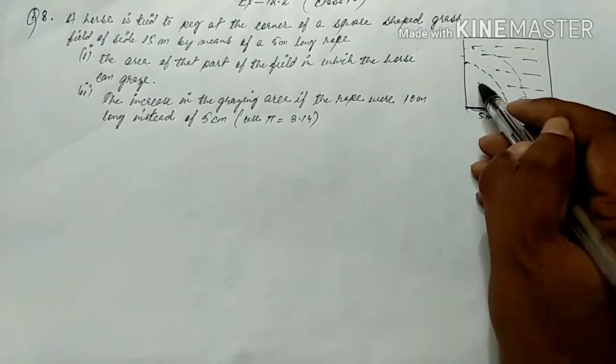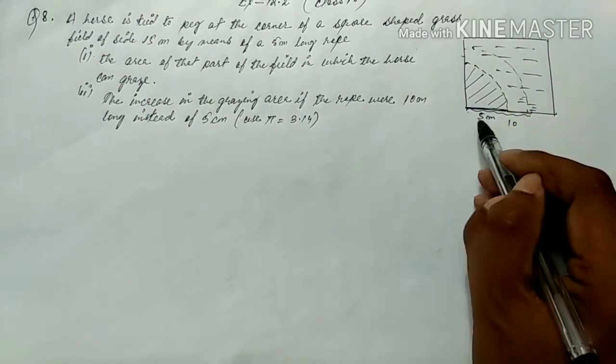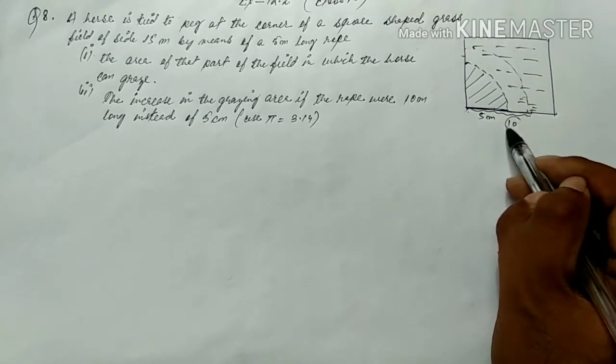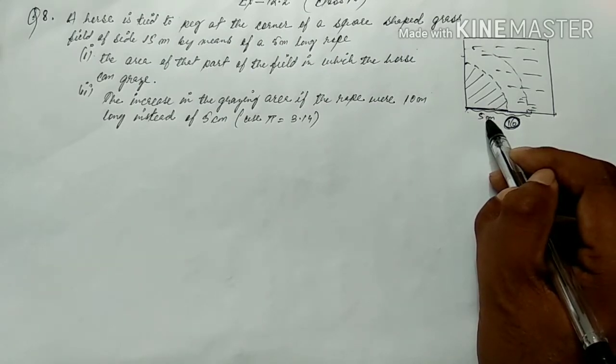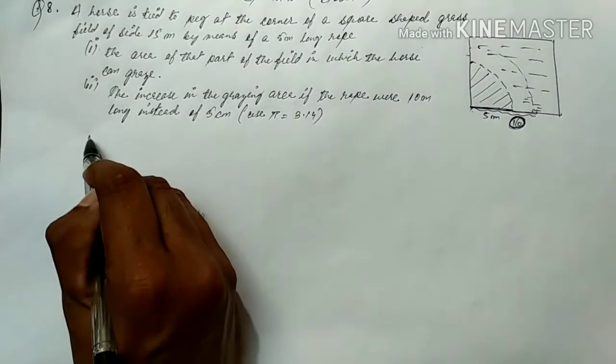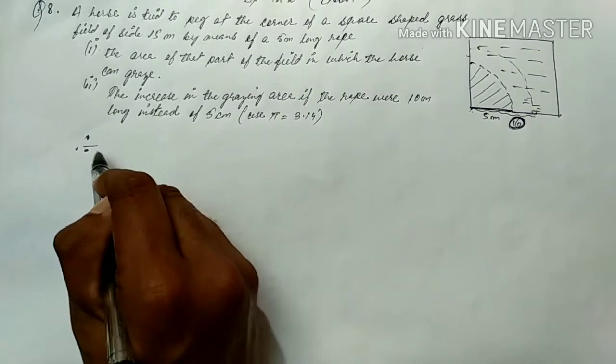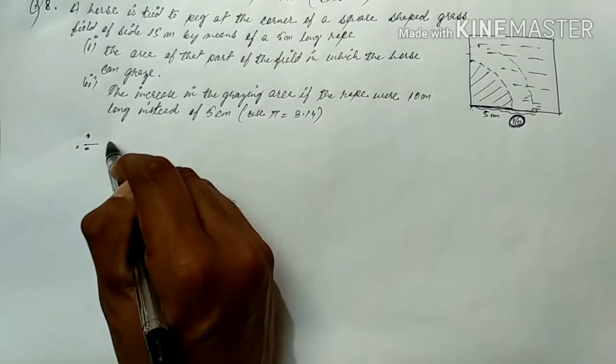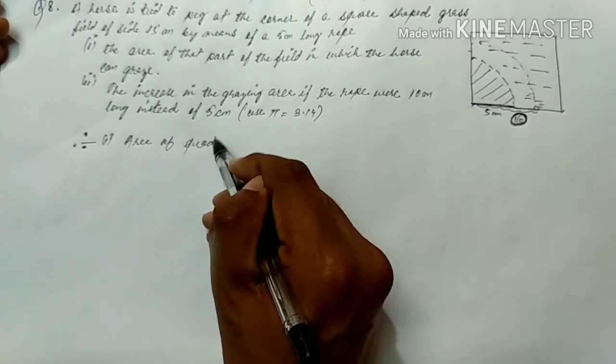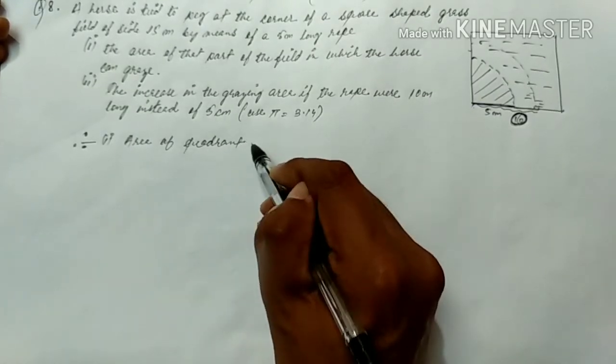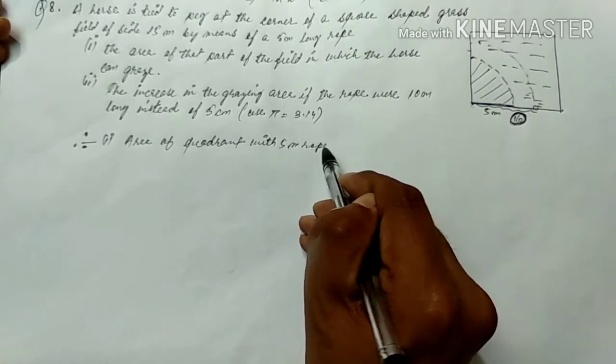Now we will find the area of the quadrant with 5 meters rope. This is the area of the quadrant with 5 meters rope.